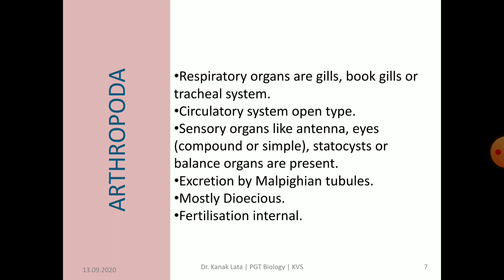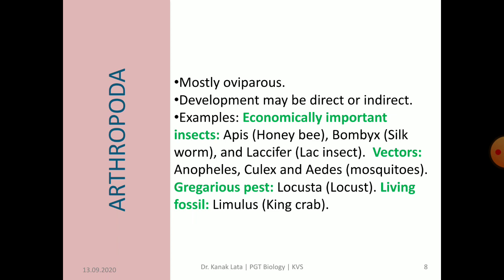Excretion takes place by Malpighian tubules. Sexes in arthropods are separate and fertilization is internal. Most arthropods are oviparous, meaning they lay eggs, and development may be direct or indirect. Some arthropods are of great economic importance like honeybees, silkworms and lac insects. Some arthropods are vectors like Anopheles, Culex and Aedes mosquitoes. Some are gregarious pests like locusts which cause great damage to crop plants. Limulus, the king crab, is a member of Arthropoda and is a living fossil.